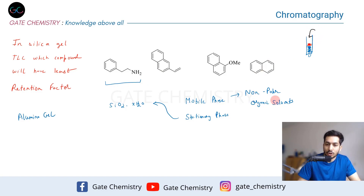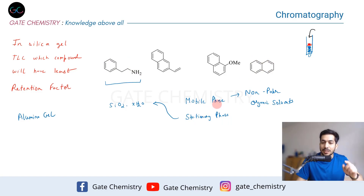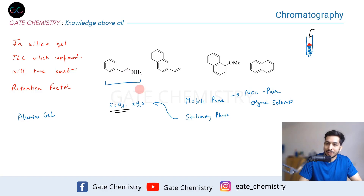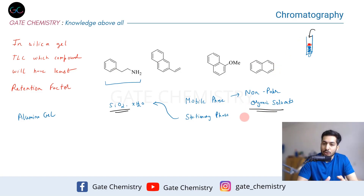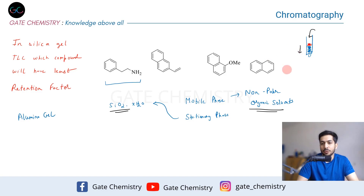Two things are happening simultaneously: each molecule interacts with the stationary phase — SiO₂ — and also interacts with the mobile phase, the organic solvent. Because the aromatic amine and naphthalene have different interactions with both phases, they flow through the silica gel at very different rates. That rate is what we call the retention factor.